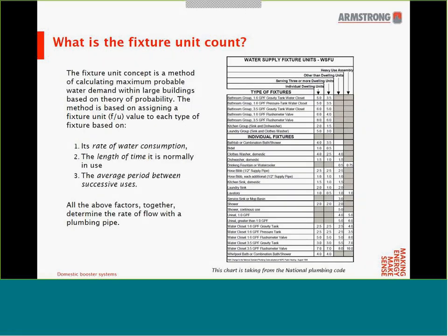So what is a fixture unit? The fixture unit is a method of calculating the maximum probable water demand within a large building based on the theory of probability. The method assigns a fixture unit (FU) value for each type of fixture based on: the rate of water consumption, the length of time it's normally in use, and the average period of time between successive uses. Keep in mind that a fixture unit is not a flow rate, but a design factor — this is very important.